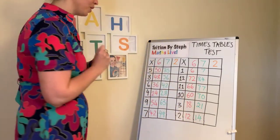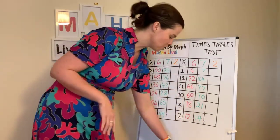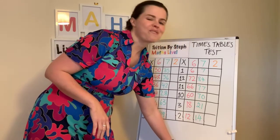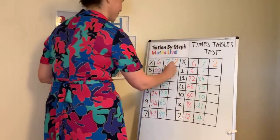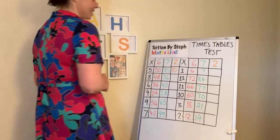So, well done if you got those. Sevens, pretty tricky timetable. And now we're on the home run with the twos. So, five twos, ten.